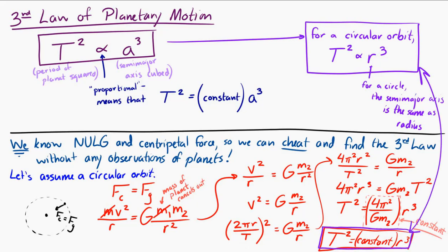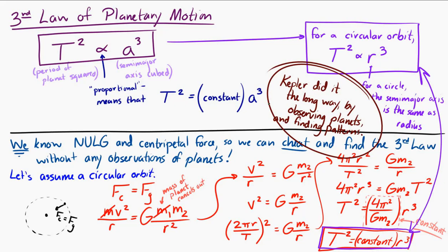Now, I did that in less than like a minute using our knowledge of Newton's universal law of gravitation and circular motion. We cheated. Kepler didn't have any of that knowledge, but he figured it out, which is pretty amazing. But now we're able to do it really quickly because we have these powerful tools that were invented after Kepler's death.